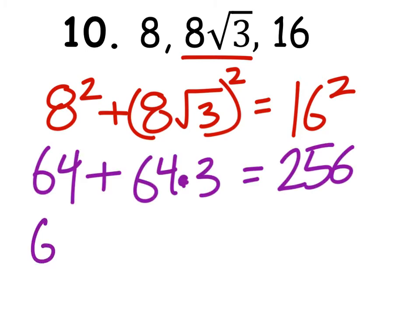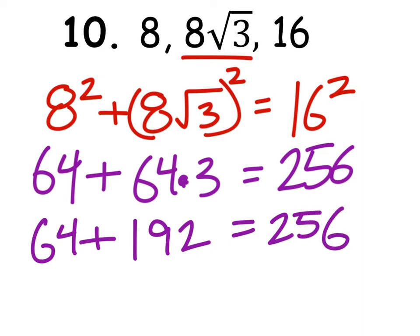We just squared everything, then we got 64 plus 64 times the 3, that'd be 192. This should equal 256. Again, I guess it's more of a question mark right there.